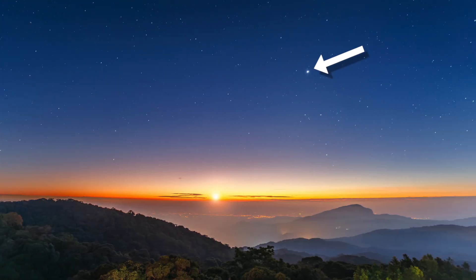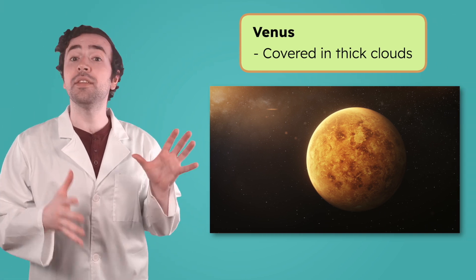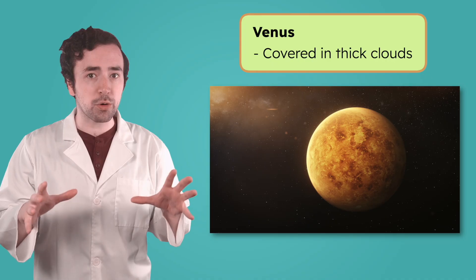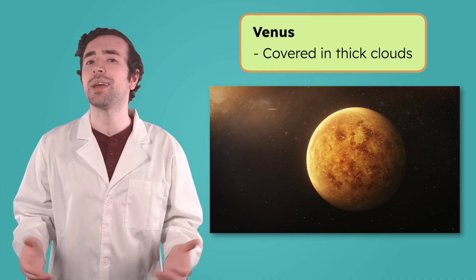If you've ever looked up at the sky just after sunset or just before sunrise, you might have seen the second planet from the sun, Venus. Venus is one of the brightest objects in our night sky. But why is it so bright? Well, Venus is covered in thick clouds. These clouds act like a giant mirror reflecting light back toward Earth and making Venus shine brightly in the sky.